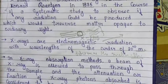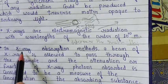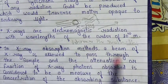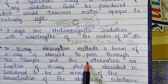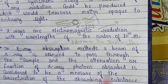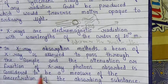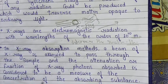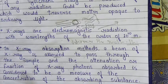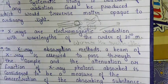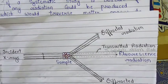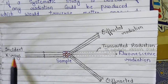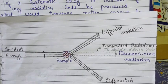In the X-ray absorption method, a beam of X-rays is allowed to pass through the sample, and the attenuation or fraction of X-ray photons absorbed is considered to be a measure of the concentration of the absorbing substance. This is the basic theory of this method, and we can understand it well by using a diagram.